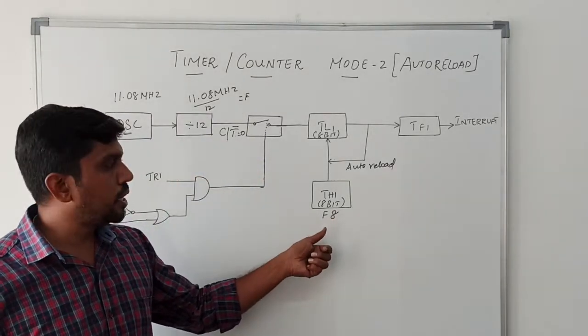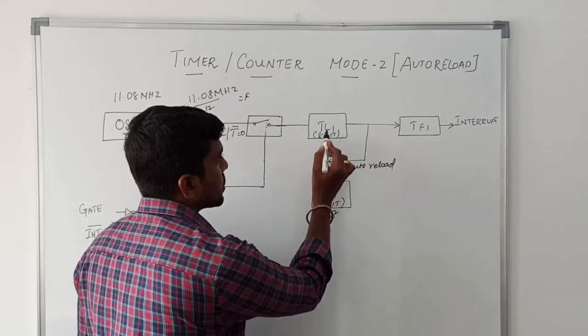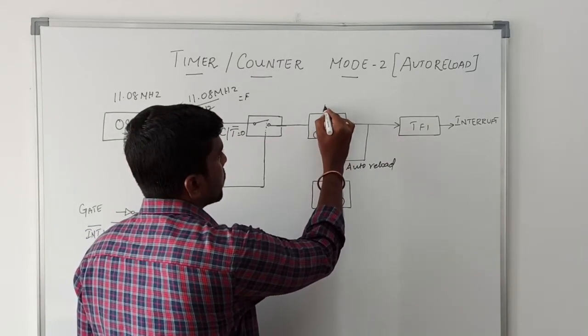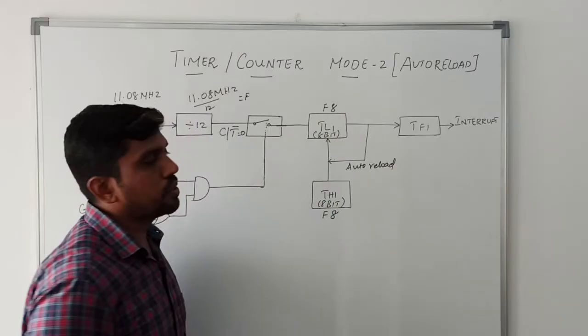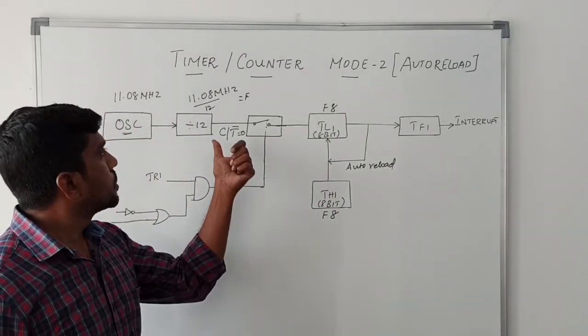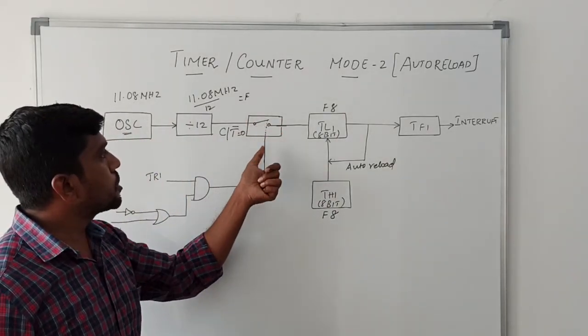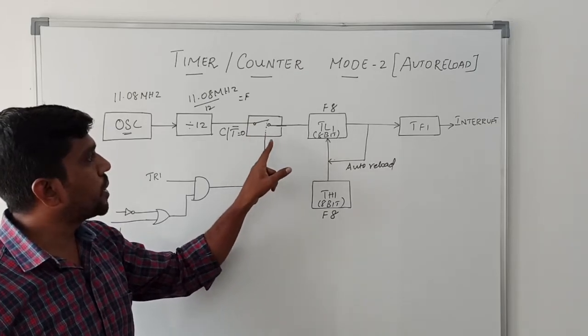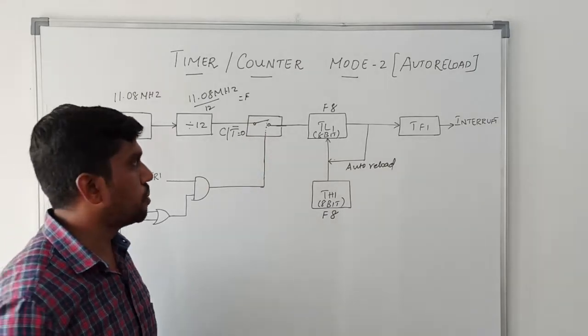The initial value of TH1 is F8. This value is transferred to TL1. Now TL1 value is F8. This switch is mainly used to determine whether the circuit is operating in timer mode or counter mode.